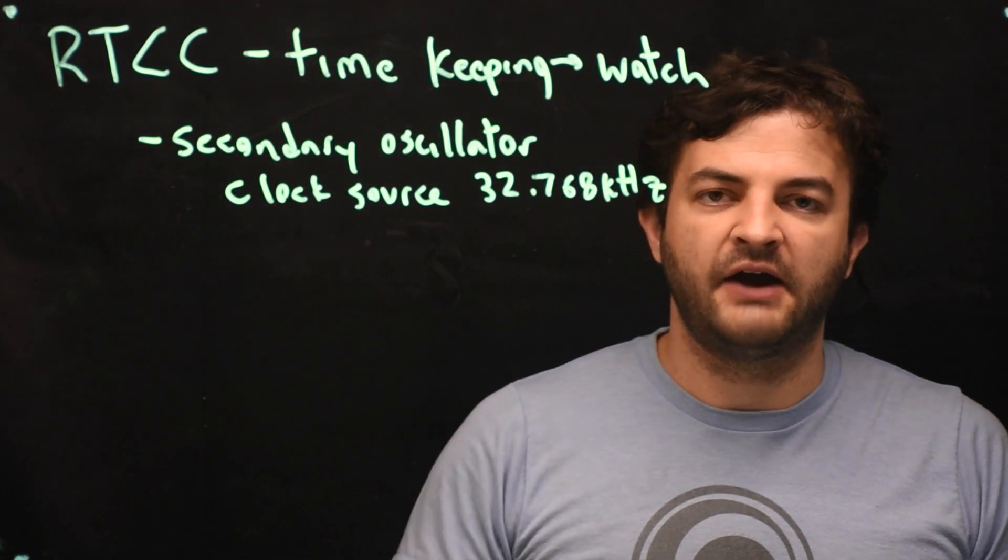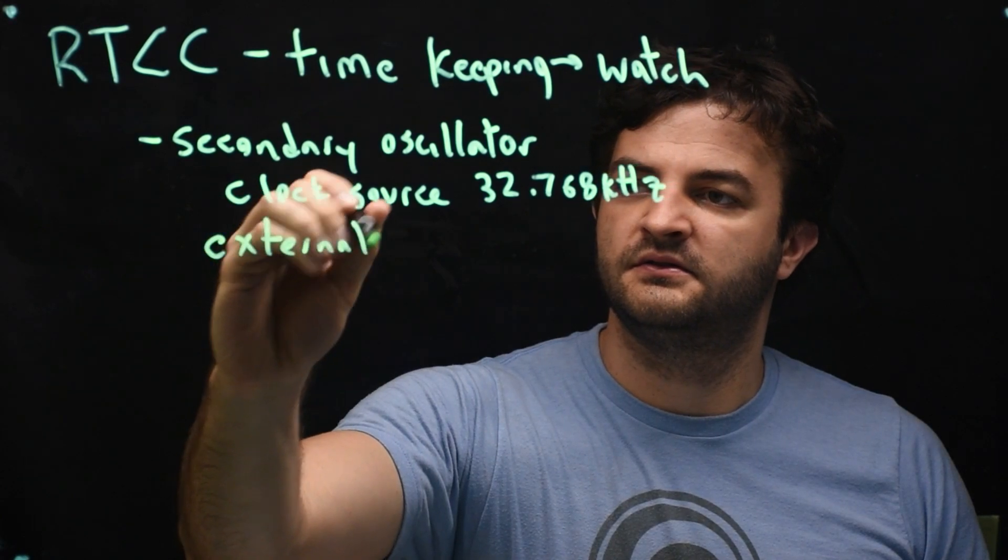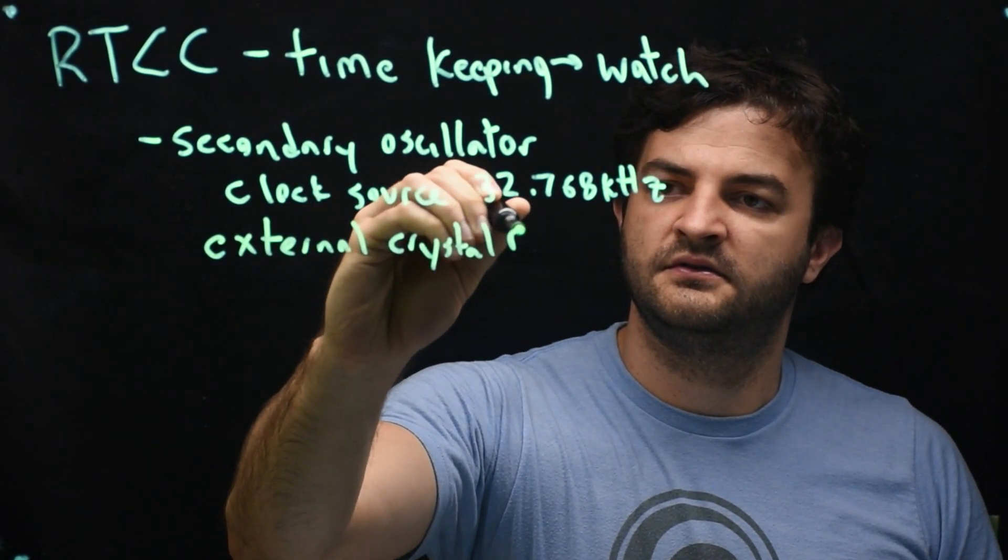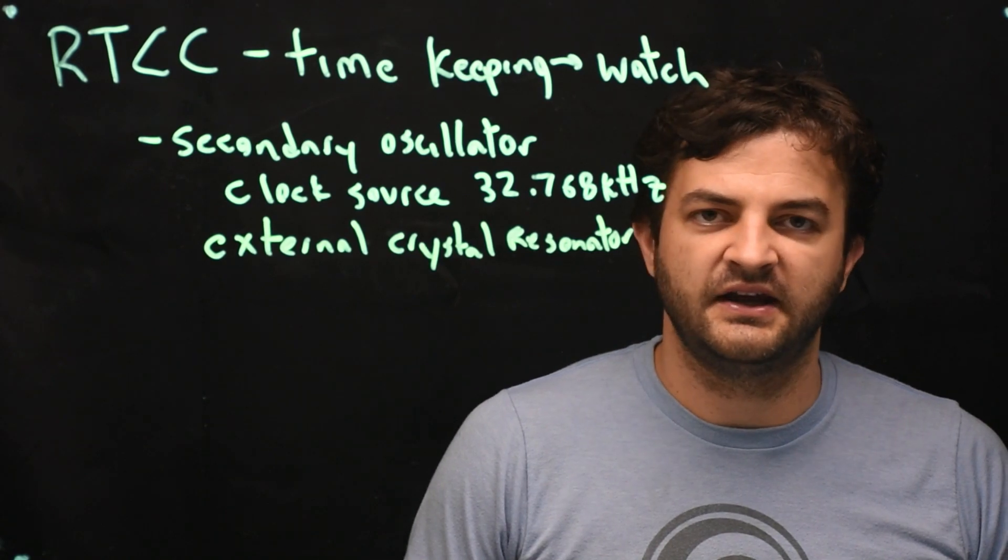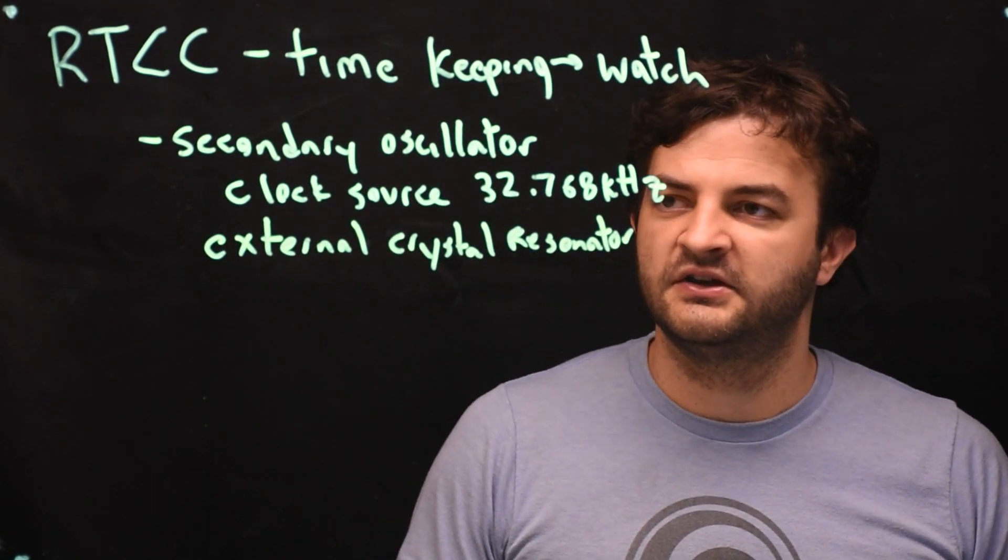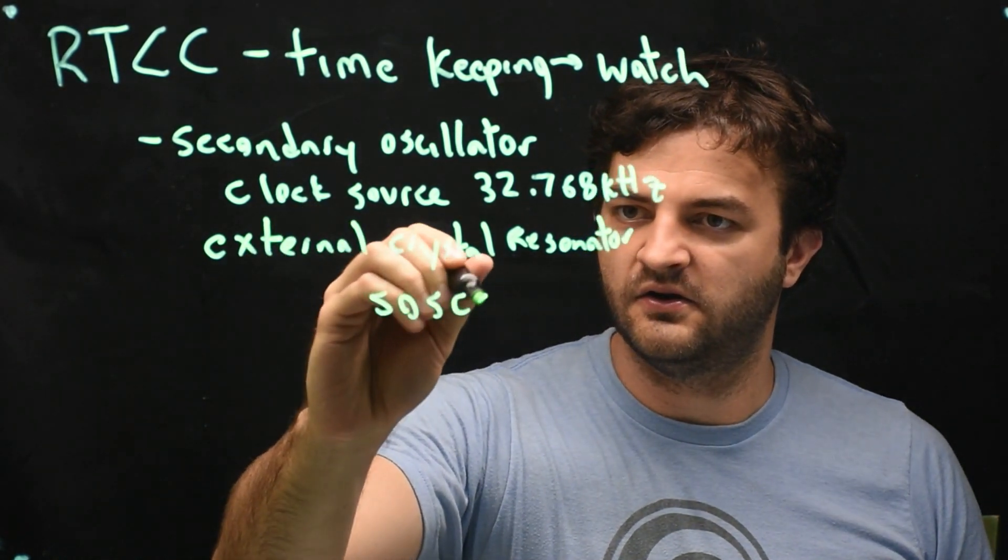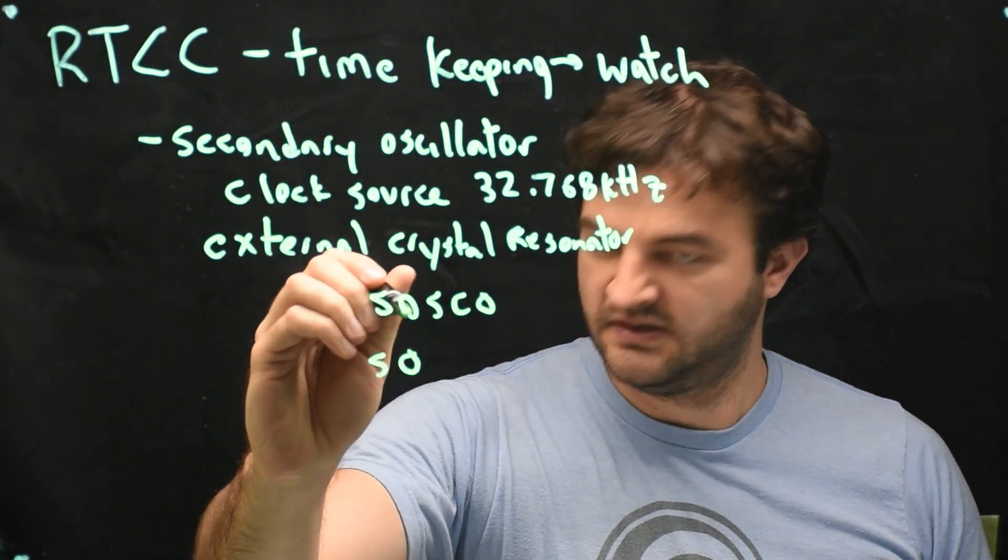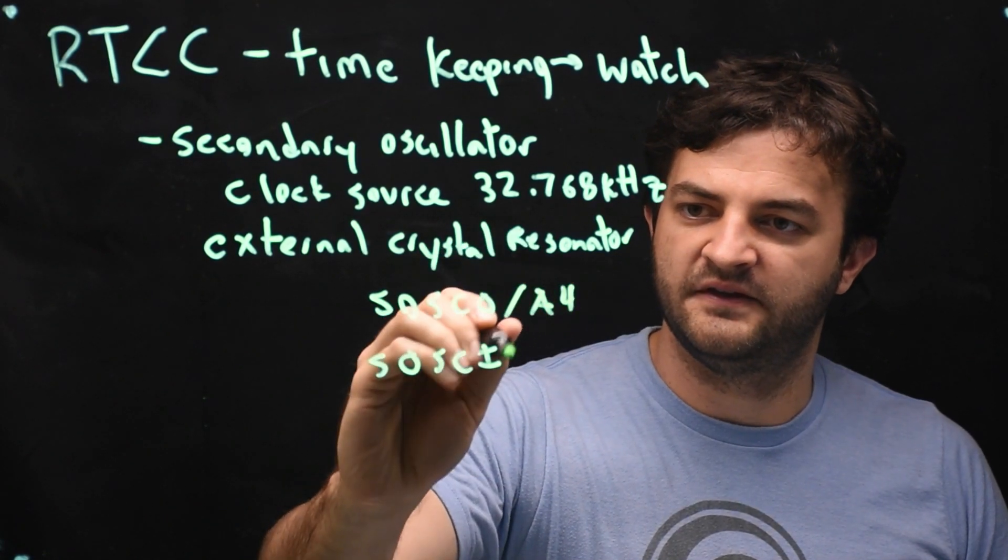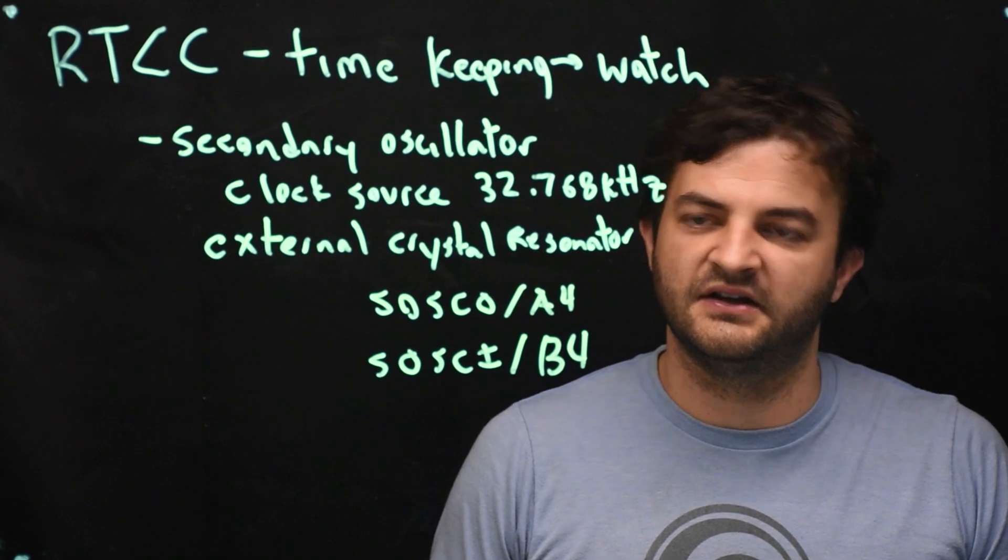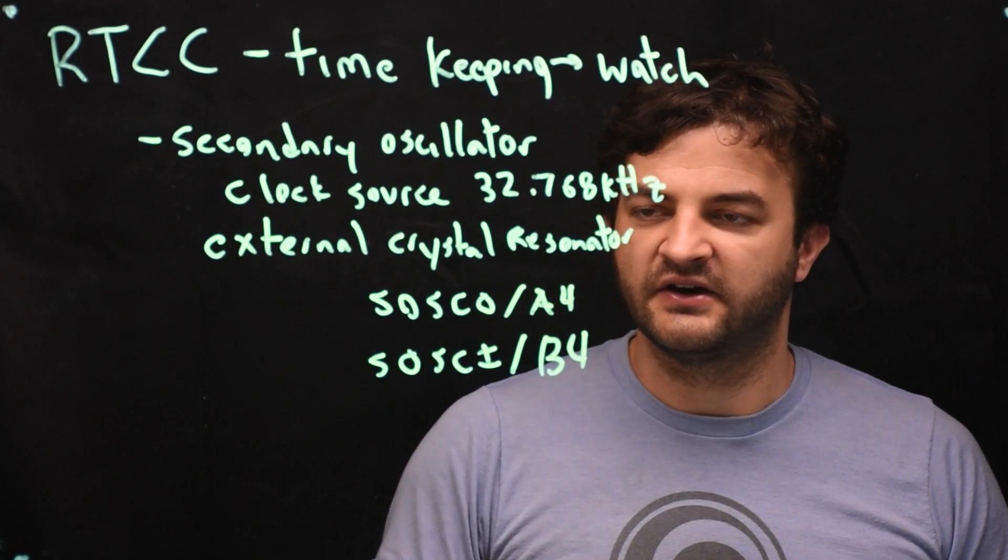Some microcontrollers have this built-in. Our PIC does not, so we have to use an external crystal resonator, similar to how we're getting the 48 megahertz on the PIC by using an 8 megahertz external crystal resonator. Here we're going to be using a 32 kilohertz crystal resonator to the secondary oscillator pins, which are SOSCO and SOSCI. The downside to these pins is that this happens to be A4 and B4. Those are the pins that I've recommended using for a user LED and a user button, so you'll have to move those pins somewhere else so that we can use the secondary oscillator here.